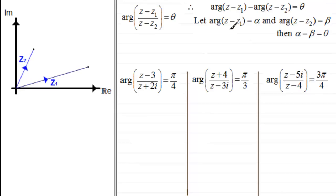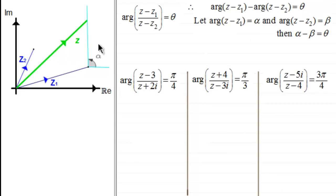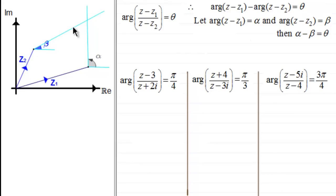The arg of z minus z1 equaling alpha represents a half-line starting from the endpoint z1, going up at an angle alpha to the horizontal, and z represents any complex number on this half-line. Similarly, the arg of z minus z2 equaling beta represents a half-line starting from z2 going up at angle beta. Since z must lie on both half-lines, it is restricted to their point of intersection.